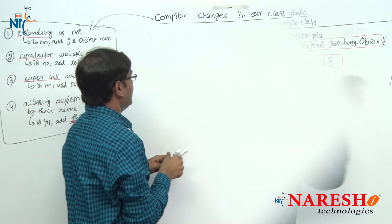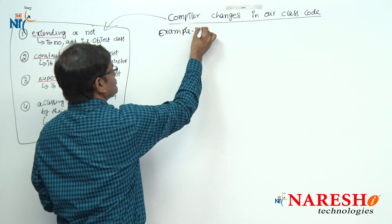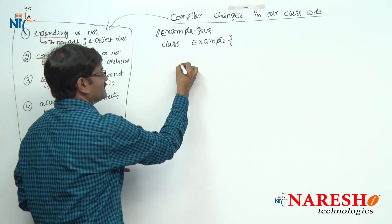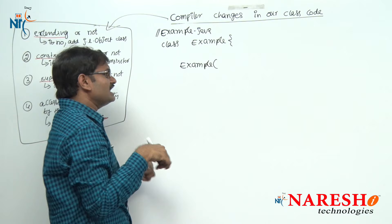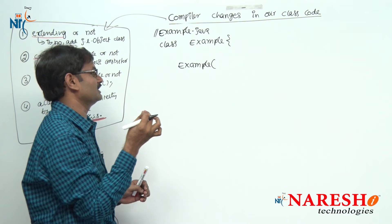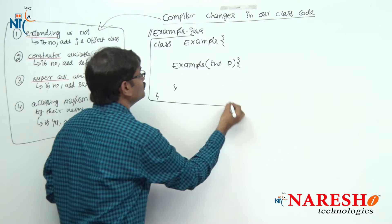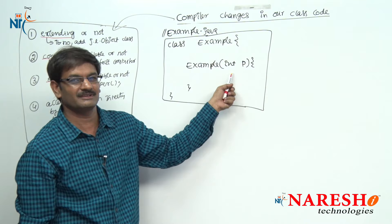Now let us see second test case. I am writing example.java again. In this file I am writing class Example, and myself writing one constructor inside — a parameterized constructor: Example(int p). Some statement inside, then close. This is case number two: a class with a parameterized constructor — it has a parameter, that is why it is called parameterized constructor.